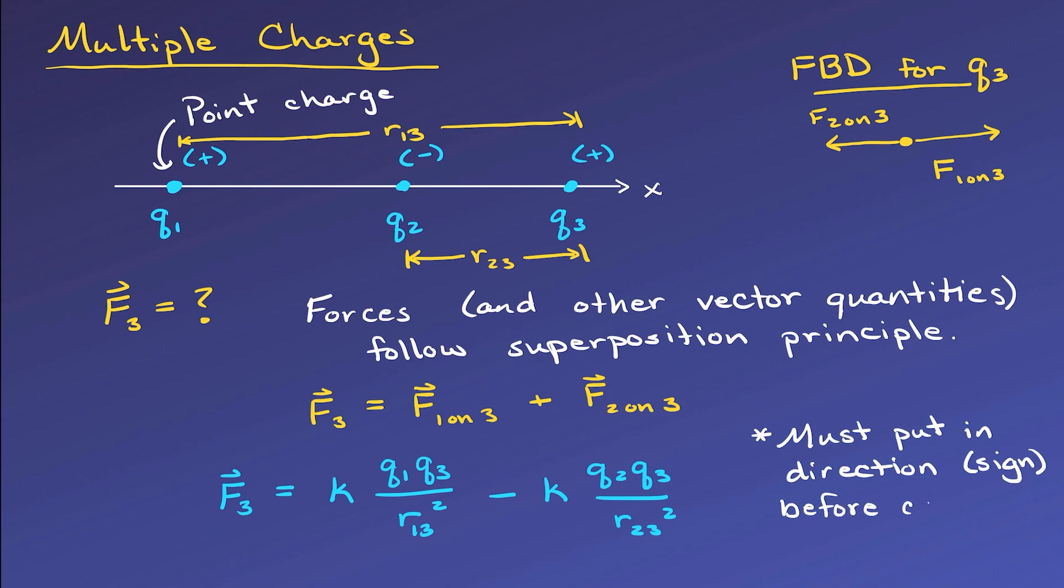It's important to notice that if we don't put in the sign correctly, which again accounts for the direction since it's a vector, the value we calculate for the force will be off. And we cannot just simply put in the sign after the fact and get the correct answer, because adding and subtracting will give different numbers. If you try to add these two numbers together and then just make it negative, that will be incorrect. You will not get the right answer.